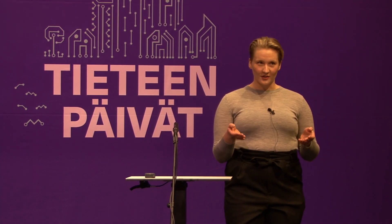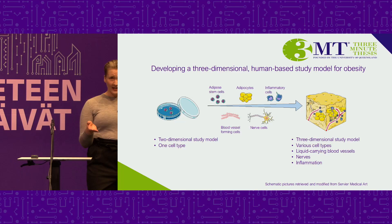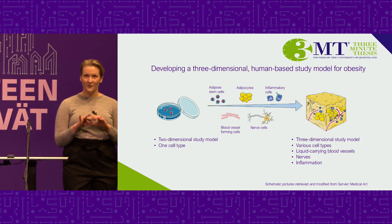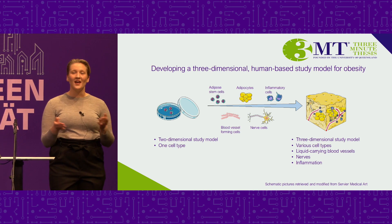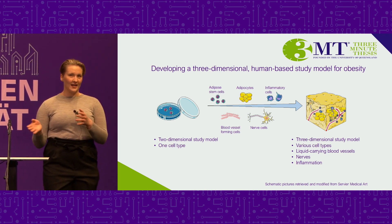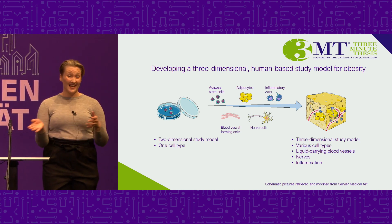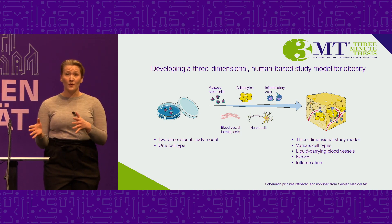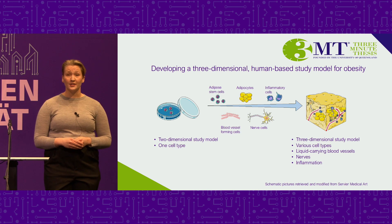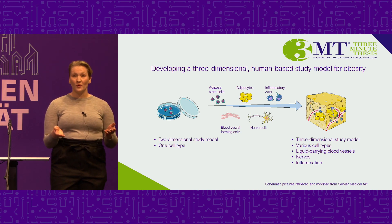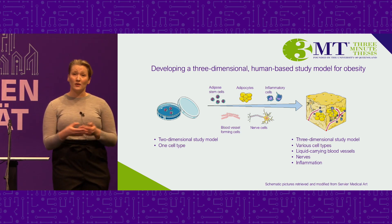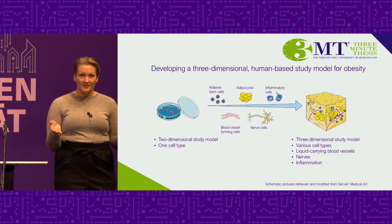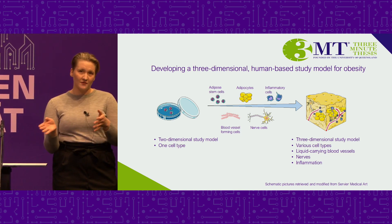Imagine being in a restaurant enjoying the most beautiful looking cake. It is so complex — it has chocolate, berries, fruit, nuts, crumb. You immediately want to recreate it at home but you only have chocolate and some nuts. It's obvious that you end up being far from the complex cake you just enjoyed. This example is an analogy of obesity modeling today: how can we model something as complex as obesity if we only have a fraction of the elements needed?